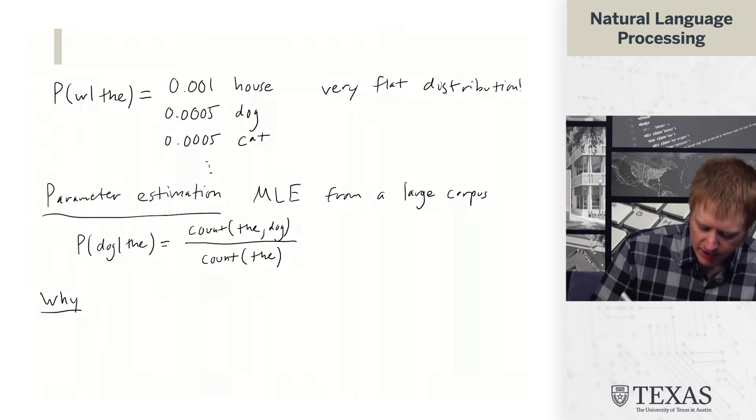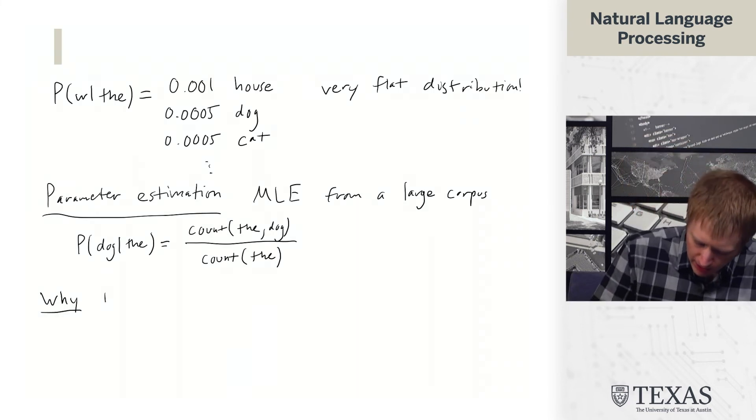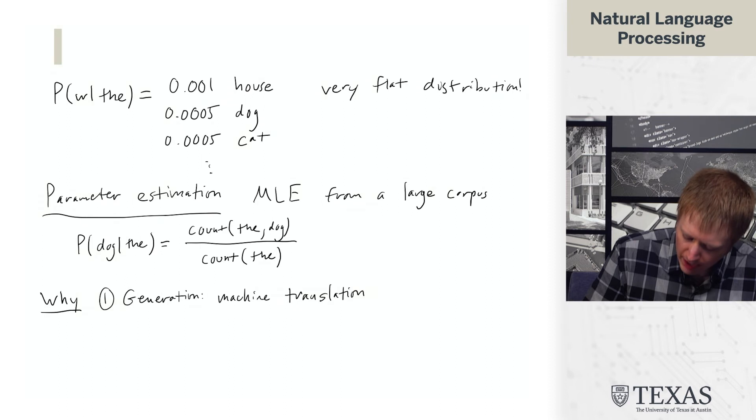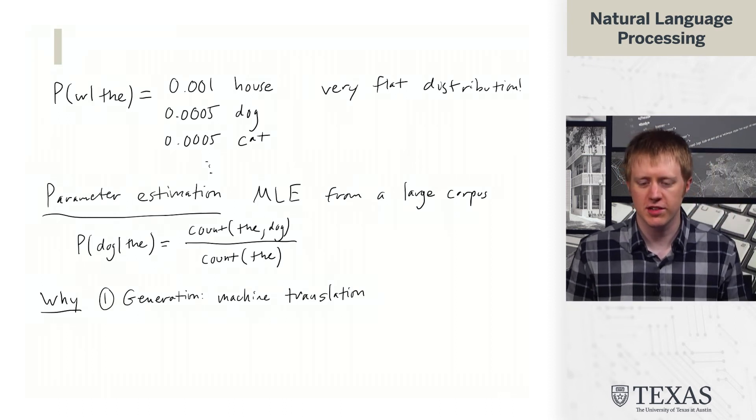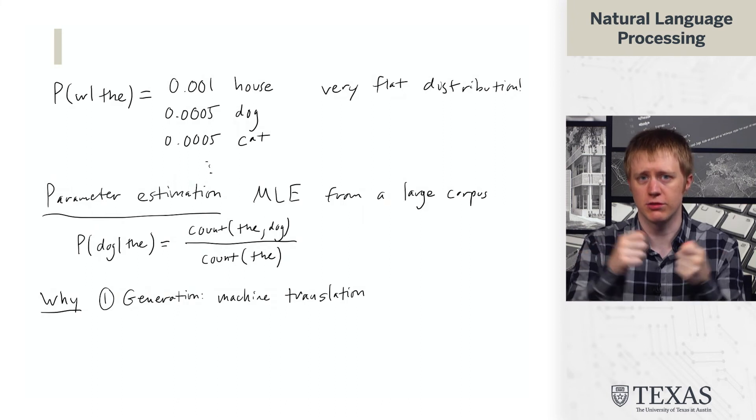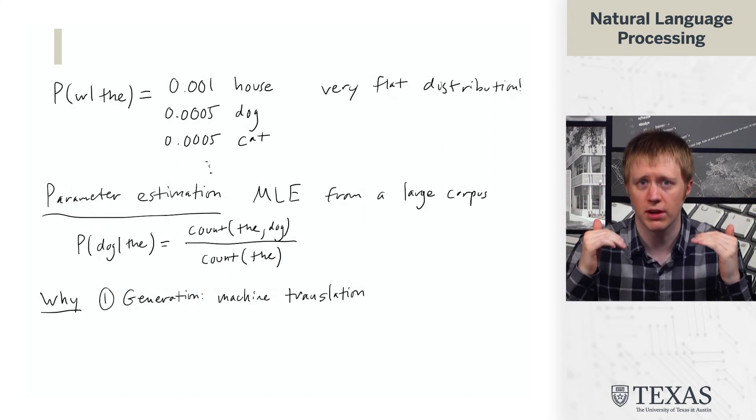So there are a few things that n-gram LMs have historically been used for. The first is generation, and specifically in machine translation. Typically, the way a phrase-based machine translation system works is you have a bunch of candidate translations of chunks of the source sentence, whatever sentence you're trying to translate into another language.